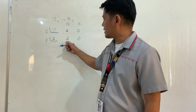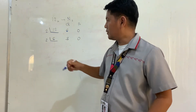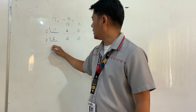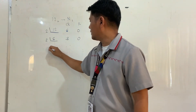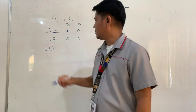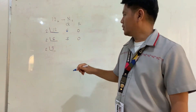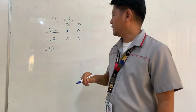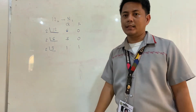Since the quotient is not yet equal to 0, we continue the process. This quotient will now be our new dividend — we divide it again by 2. So 3 divided by 2, we get 1, and the remainder is 1.